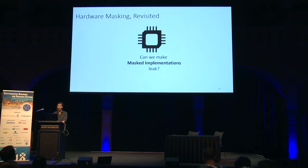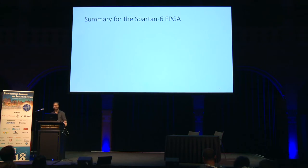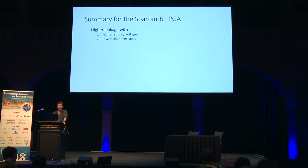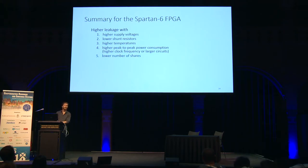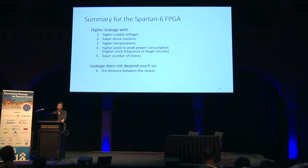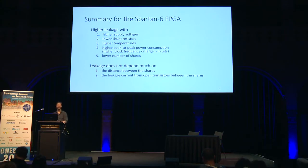To conclude: can we make masked implementations leak? That's a clear yes. We can increase leakage by raising the supply voltage, lowering the shunt resistor, increasing the temperature, increasing peak-to-peak power consumption (via higher clock frequency or larger circuits), and lowering the number of shares. We also found that leakage does not depend much on the distance between shares, nor on the number of open transistors or their leakage currents.